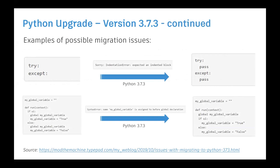A few issues have been outlined — for example, in the earlier version you could have a try-except block without any code, but Python 3.7.3 does not support that, so you need to include a pass statement. There is a link provided to a blog at the bottom which outlines some of the issues noticed and can help with migration from 3.5.3 to 3.7.3.